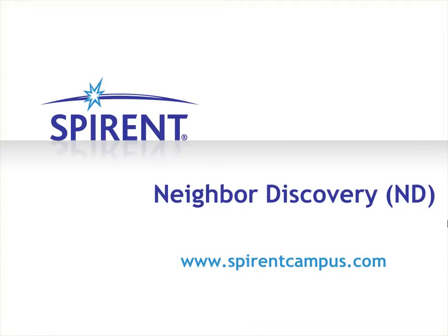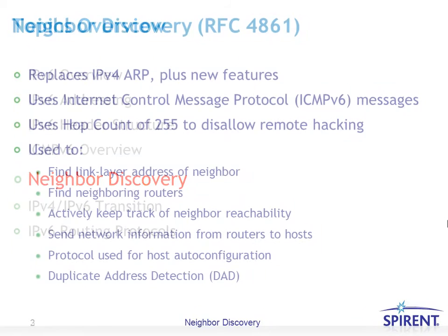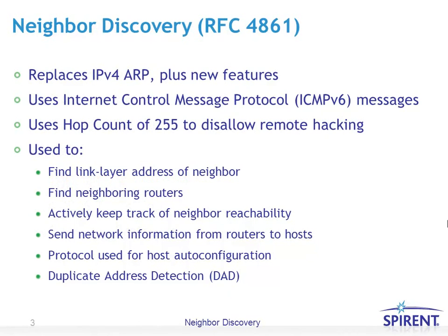Welcome to this topic of the Demystifying IPv6 course on Neighbor Discovery. Neighbor Discovery is defined by RFC 4861. It's a protocol that replaces IPv4's ARP, or Address Resolution Protocol, plus it adds many new features. It uses ICMPv6 messages as described in the previous topic as its basis for protocol exchange.